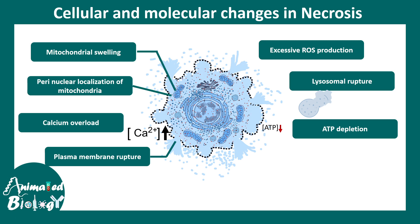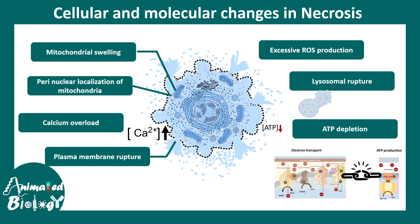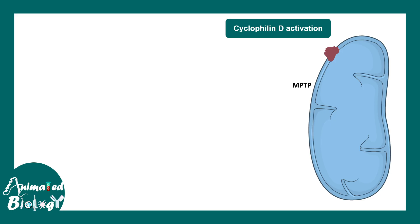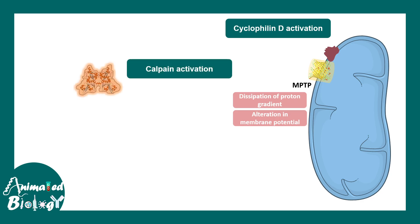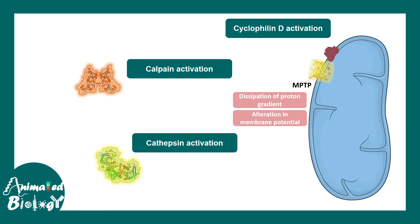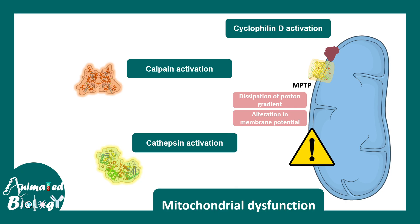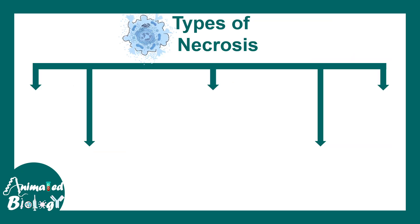Another prominent feature is decoupling of the electron transport chain from ATP production, which is very often seen in necrosis. When it comes to mitochondria, cyclophilin deactivation is a prominent feature and leads to dissipation of the proton gradient and alteration in mitochondrial membrane potential, making the mitochondria dysfunctional. In addition, it leads to calpain activation and cathepsin deactivation, which have further consequences for cellular physiology. Overall, mitochondrial dysfunction is a very prominent feature of necrosis.